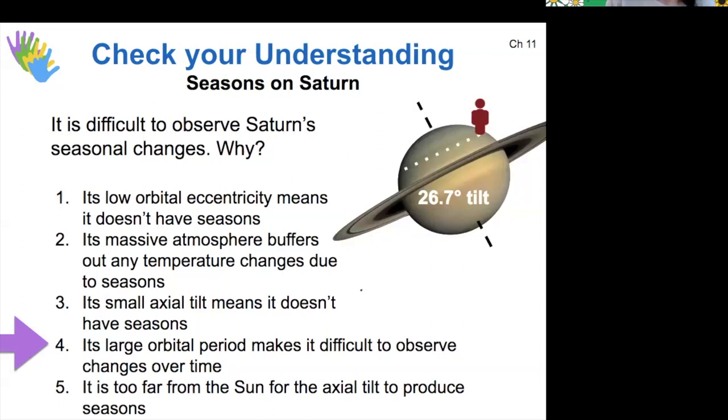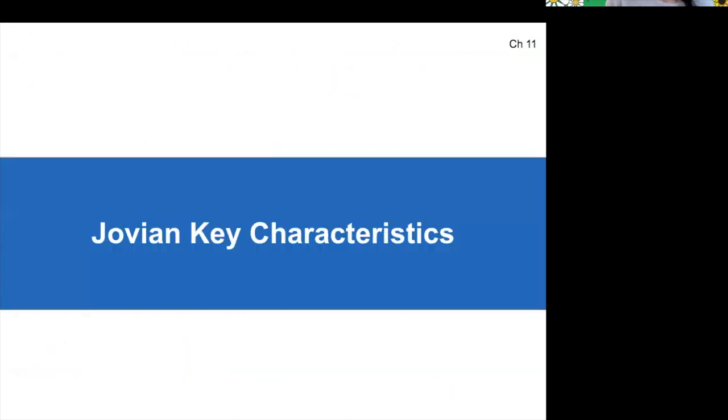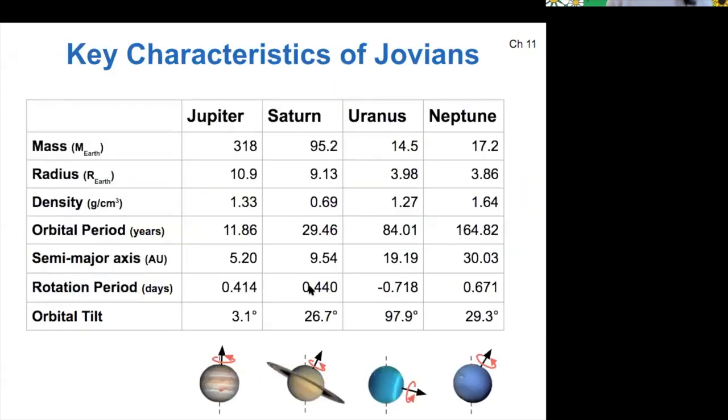So let me see, let me come back to our overall key characteristics of Jovian planets. Okay. So our orbital period in terms of years, Jupiter has an almost 12 year orbital period. Saturn's is about 30 years and then Uranus and Neptune even longer. So 84 and 164 years.